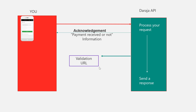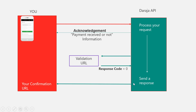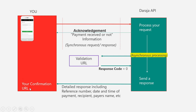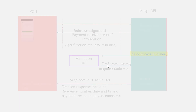That transaction is one a customer is trying to send using their SIM card. You send that information to Safaricom telling them you're either accepting or rejecting the transaction. If you accept - a response code of zero - Daraja sends the final data to your confirmation URL. One of the main differences between Lipa na Mpesa and C2B is that for C2B we must have both a validation URL and a confirmation URL.